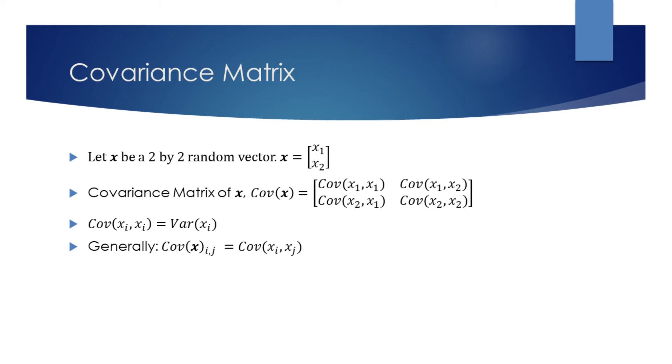The rows and columns in the covariance matrix give the covariance between the corresponding elements of its random vector. For example, in the second row of the first column, we have the covariance between the second and the first element of the random vector.